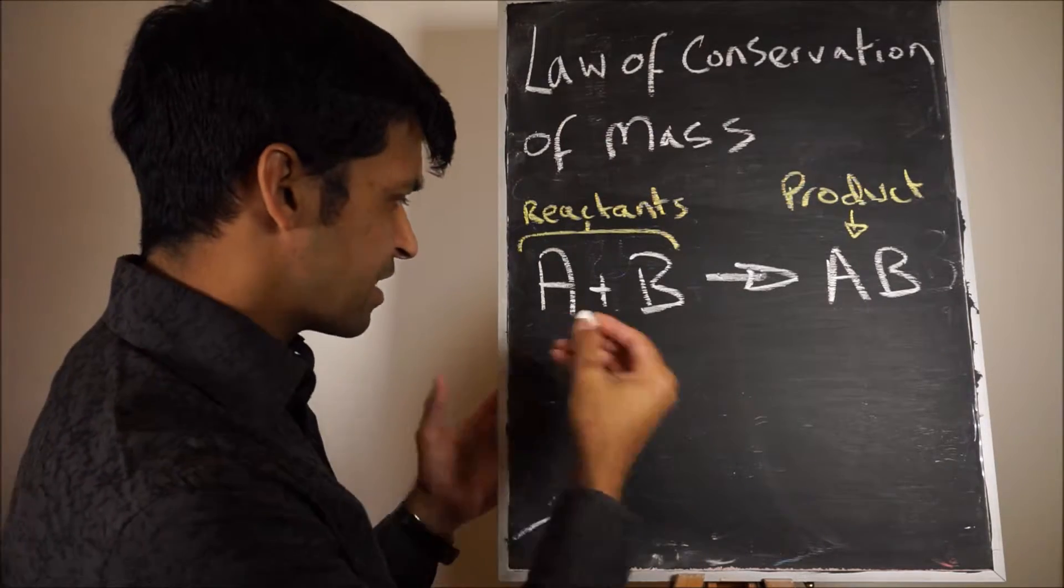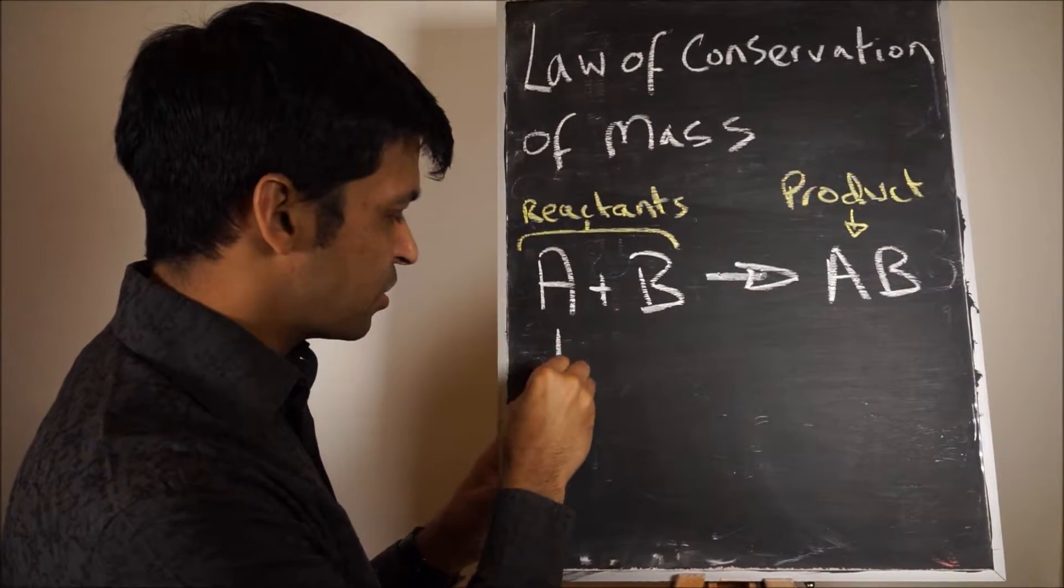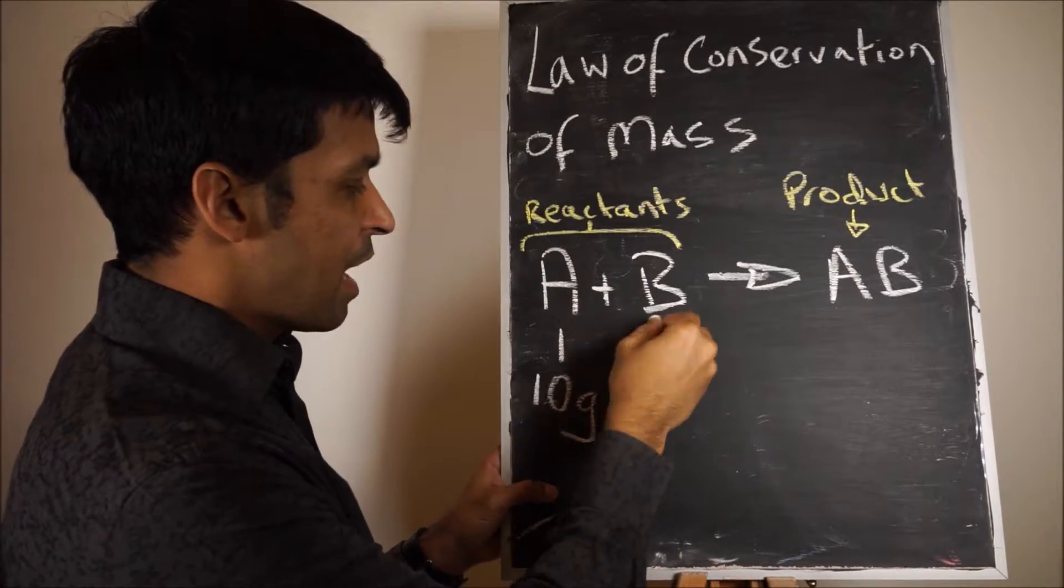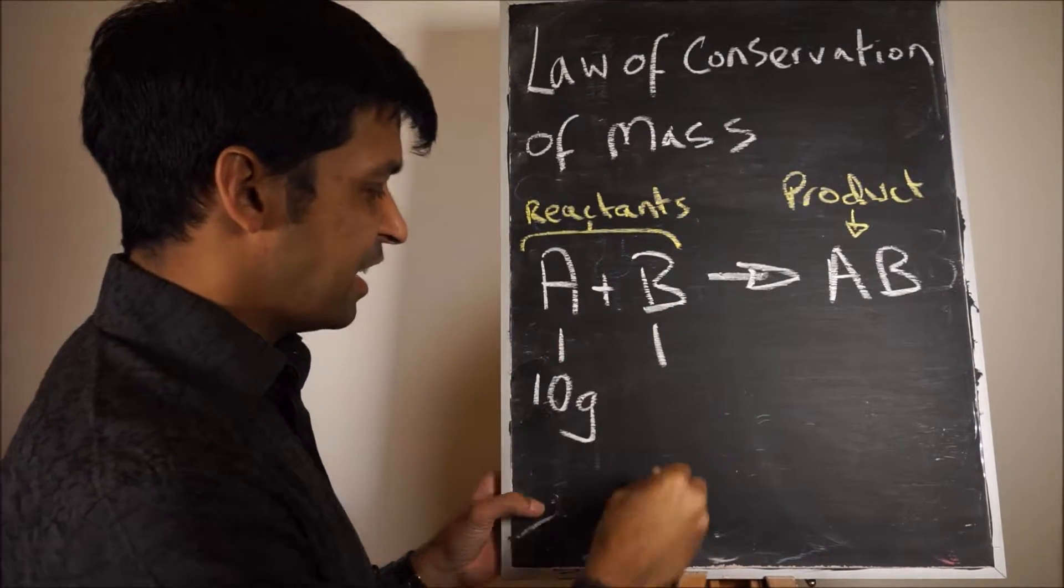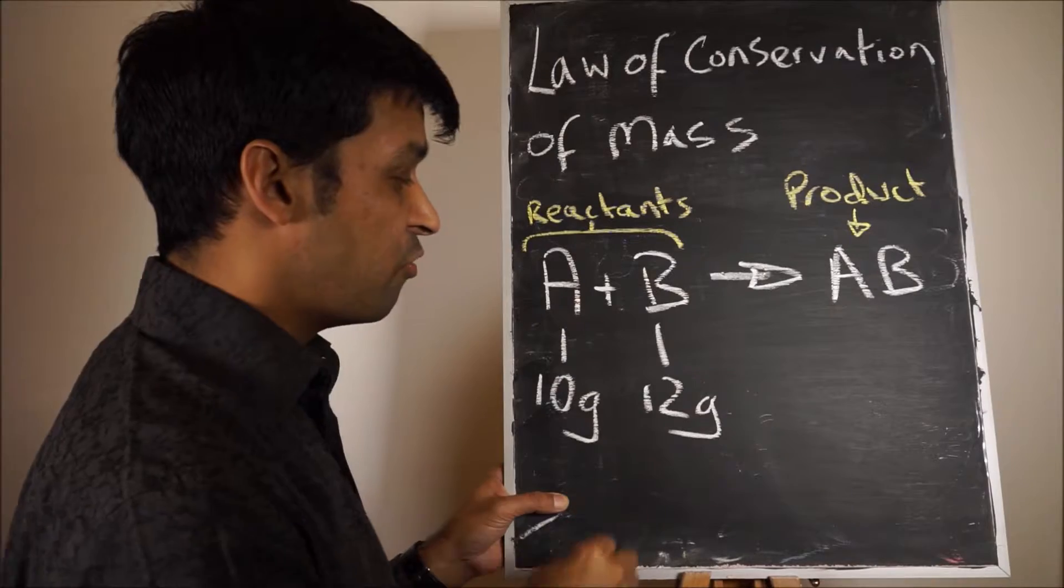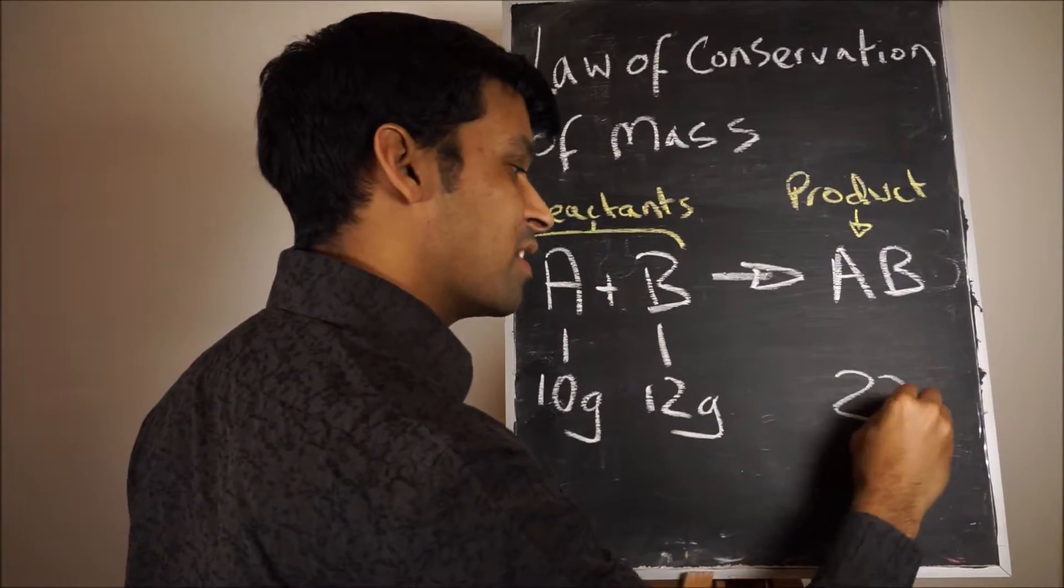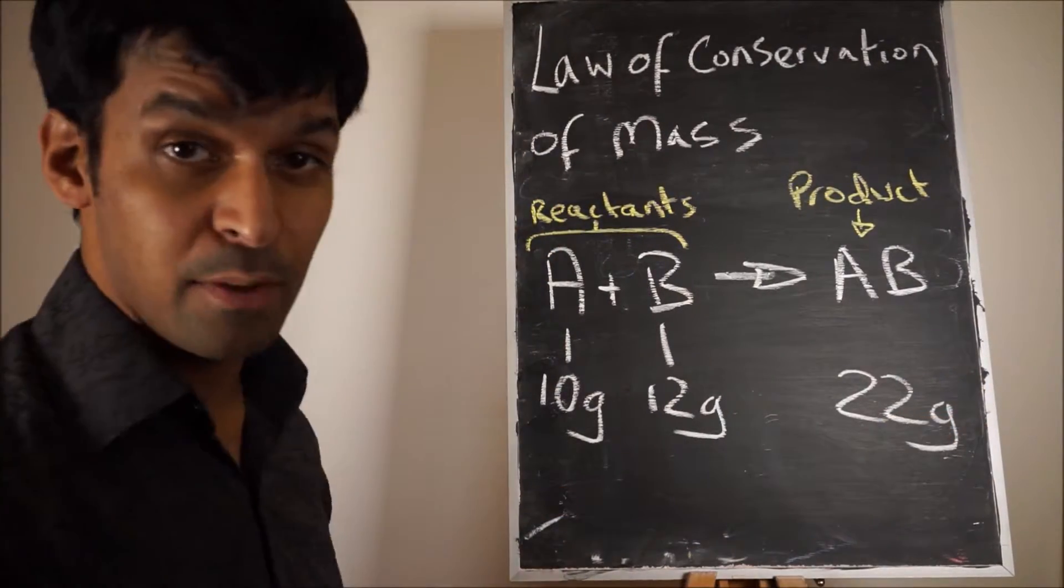So let's just have a look. Let's just put some numbers in there. Let's just say there was 10 grams here of A and say 12 grams of B. That's going to give you 22 grams of AB.